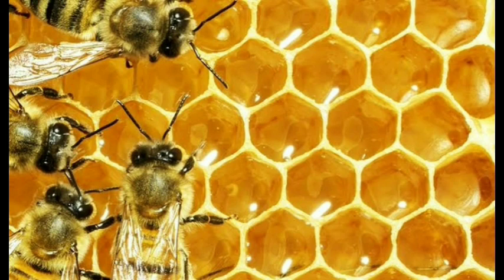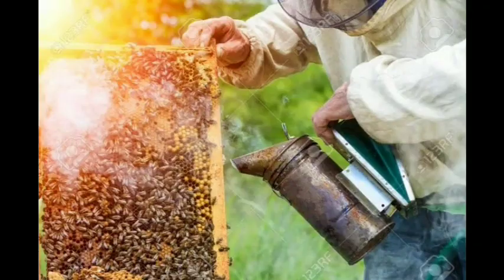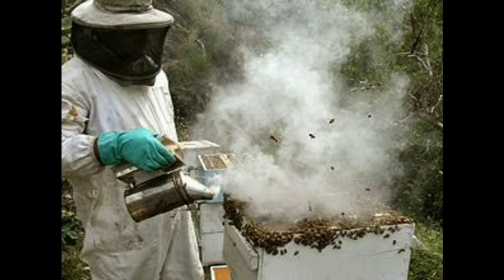If you are asked to draw a honeycomb, you are going to draw this hexagonal structure — hexagonal means it's a six-sided structure as you can see in the picture. So if it is asked in the exam, you will draw this six-sided figure. Now, honey is collected from a beehive by lighting a fire under it. The heat and smoke drives the bees out of the hive. The honey collectors then remove the hive and collect the honey stored in it.